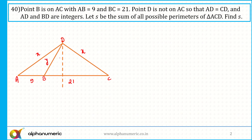BD is equal to Y. Since it is an isosceles triangle, dropping a perpendicular will divide the base into two equal parts. Let's say this is point P. The total length of AC equals 21 plus 9, which is 30. Point P is the midpoint of AC, so the length PC equals 15, and BP equals 6.